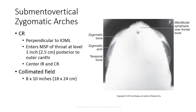The collimated field should be set to a size of 8 by 10 inches. It should be noted that the technical factors for this view merely need to penetrate the arches, which are slightly thicker than the bones of the finger, and it is not necessary to use a higher technical factor as you would in the SMV view of the skull.